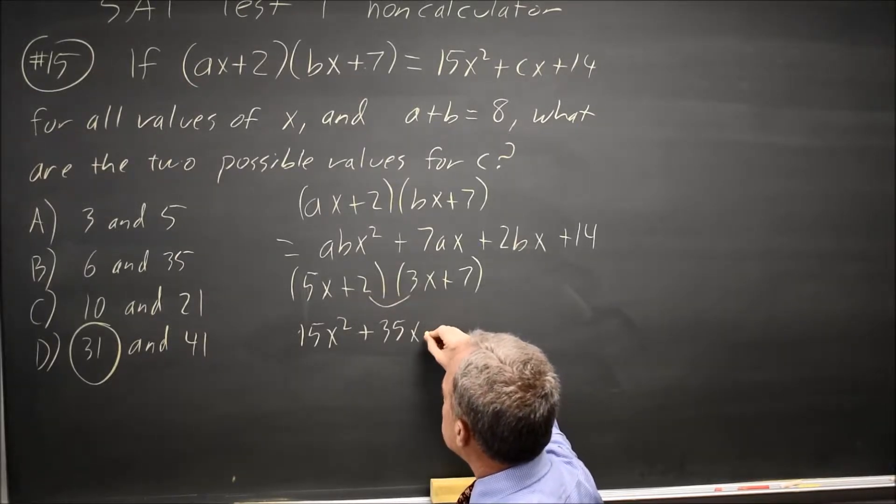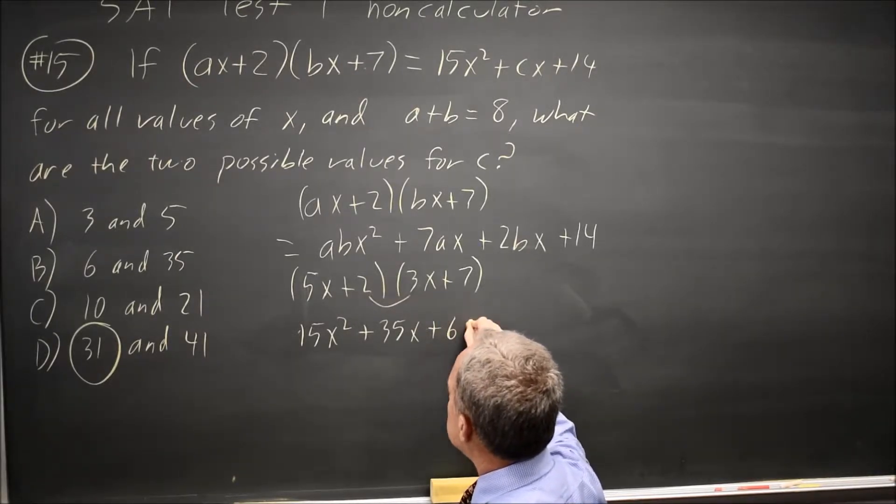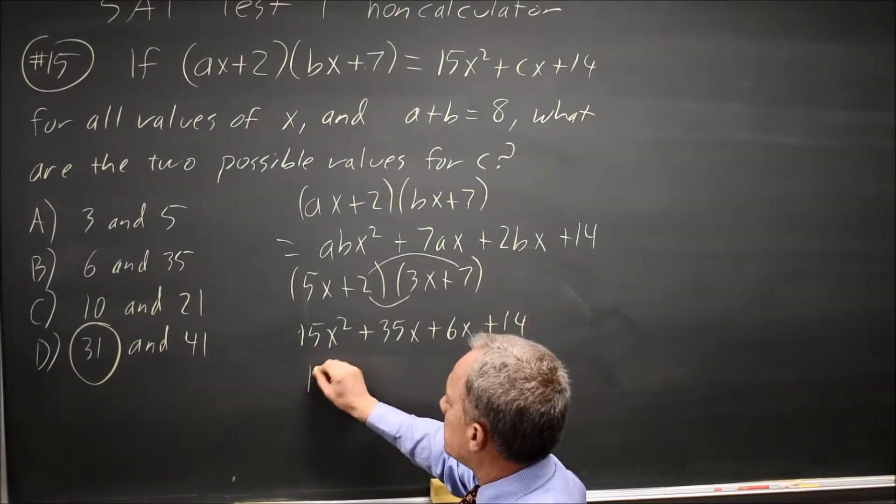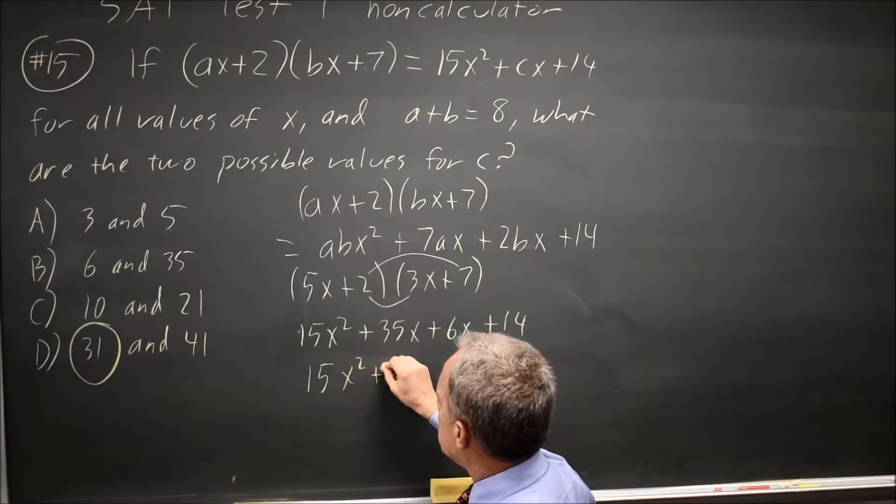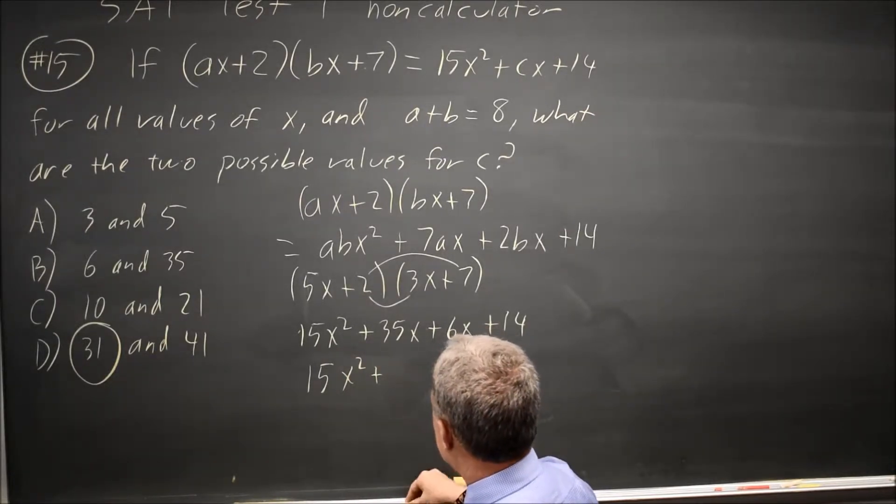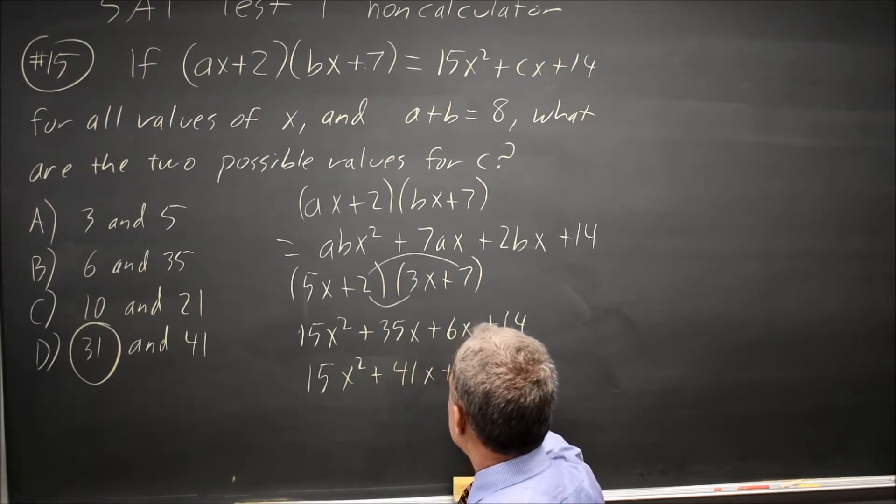Inside, 3X times 2 is plus 6X. And last, 2 times 7 is 14. This simplifies to 15X squared plus 35X plus 6X is 41X plus 14.